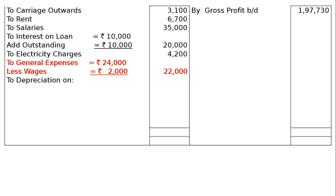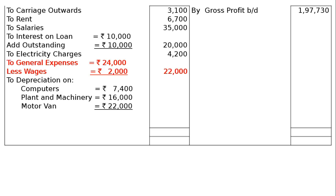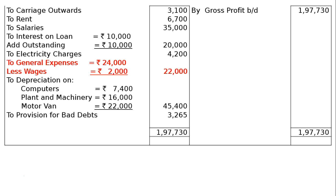Next is depreciation: on computers Rs. 7,400; plant and machinery Rs. 16,000; motor van Rs. 22,000 — total Rs. 45,400. Then to provision for bad debts Rs. 3,265, as per adjustment number 3: create a provision for doubtful debts at the rate of 5%. The credit side of the profit and loss account totals Rs. 1,97,730.